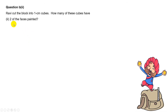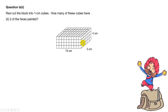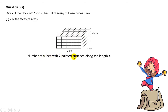Now for Part 2, we want to find the number of cubes that have 2 of the faces painted. Can you tell me which cubes have 2 of the faces painted? To answer the question, let's look at the length first. When you look at the length, the number of cubes with 2 painted surfaces will be along the edges.